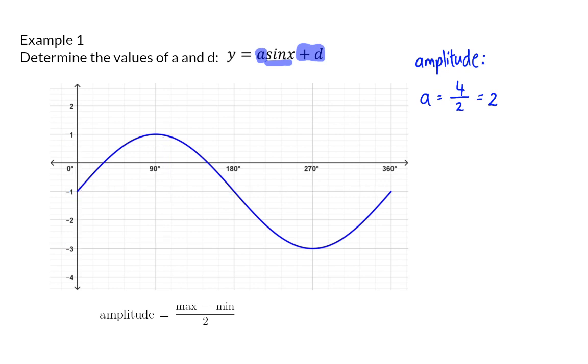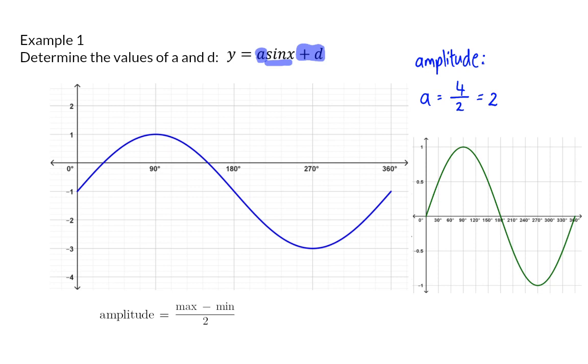Similarly, if you take into account the original mother graph, the y-intercept is at 0, 0. In our new graph, the y-intercept is at minus 1, which once again shows us that this graph moved down 1 unit, and therefore the d value is minus 1.